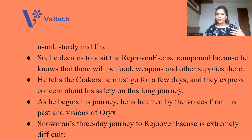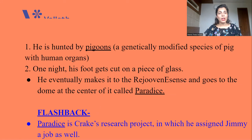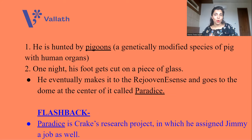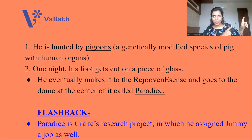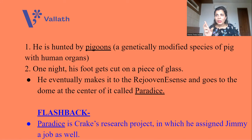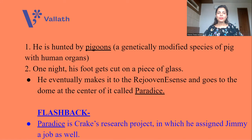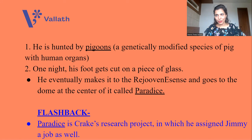Snowman's three-day journey to RejuvenEssence is extremely difficult. For example, he is hunted by pigoons — genetically modified species of pig with human organs. One night his foot gets cut on a piece of glass. But eventually Snowman makes it to RejuvenEssence and goes to the dome at the center of it, which is called Paradise. He has come here to take food, weapons, and other essential things. Now let's move to the past flashback to understand what RejuvenEssence and Paradise are. Paradise is Crake's research project, for which he assigned Jimmy the job of running an ad campaign for Bliss Plus.